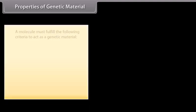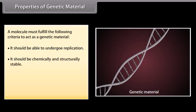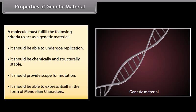A molecule must fulfill the following criteria to act as a genetic material: it should be able to undergo replication; it should be chemically and structurally stable; it should provide scope for mutation; and it should be able to express itself in the form of Mendelian characters.